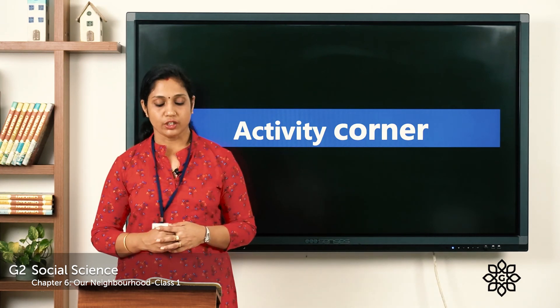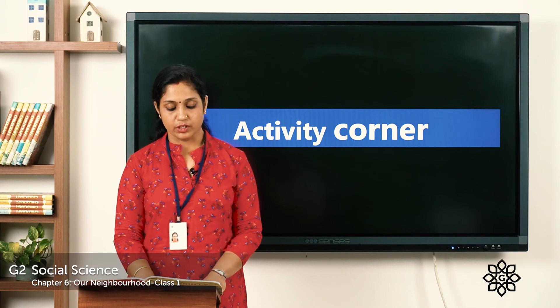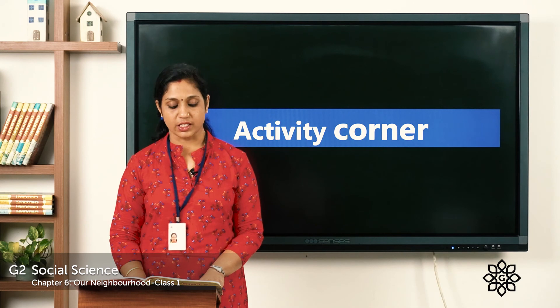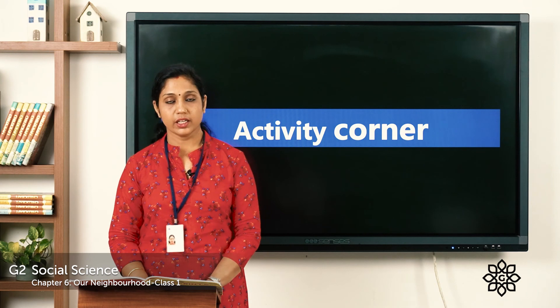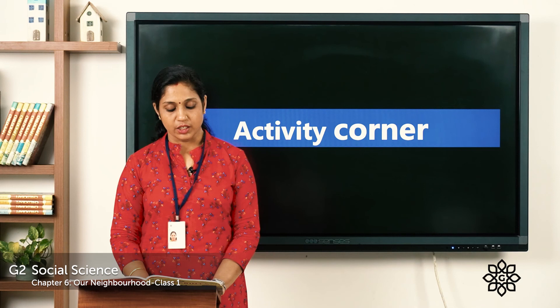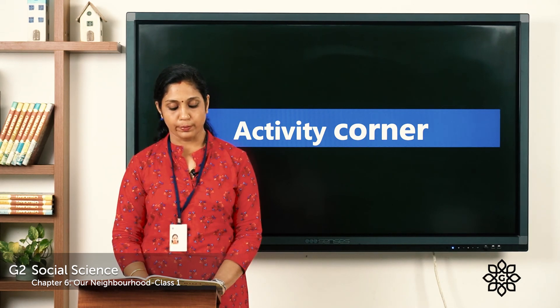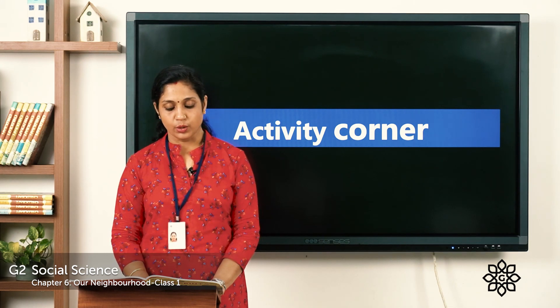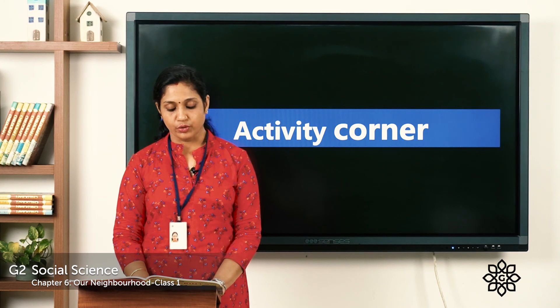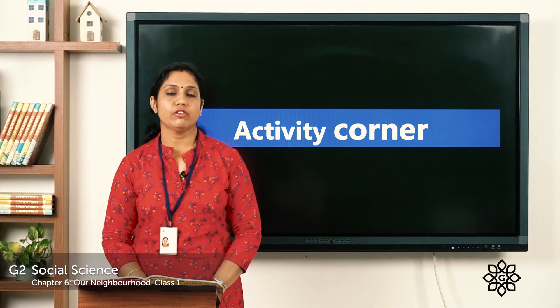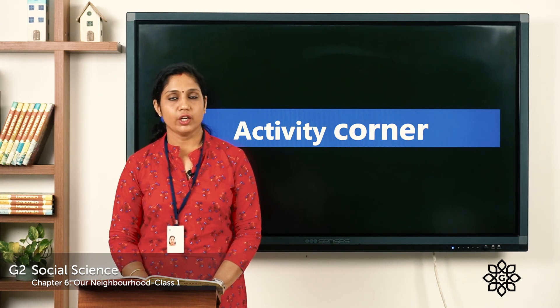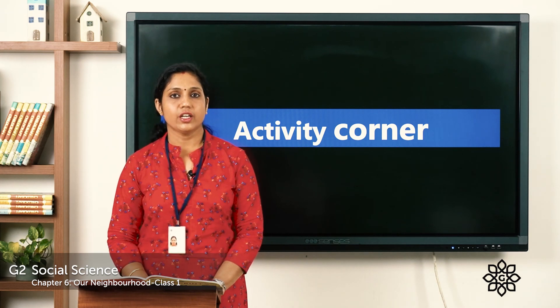Next we have the activity corner. Dial in emergency: collect phone numbers of your local police station, fire station, hospital, and other places such as a grocery and chemist shop. Keep these numbers with you in case of an emergency. Life skills: Do you know all the landmarks of your neighbourhood? With the help of your parents, find out the names of these landmarks. Note them down in your diary — if you are ever lost, you can mention some landmarks to the police and they will help you find your way back home.